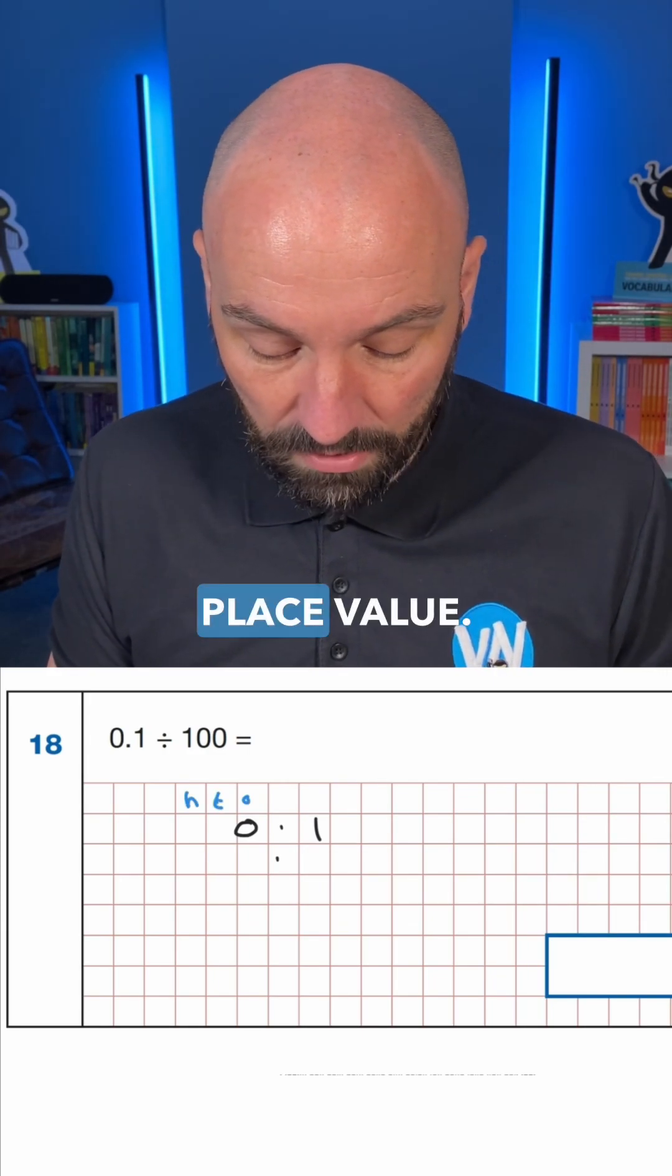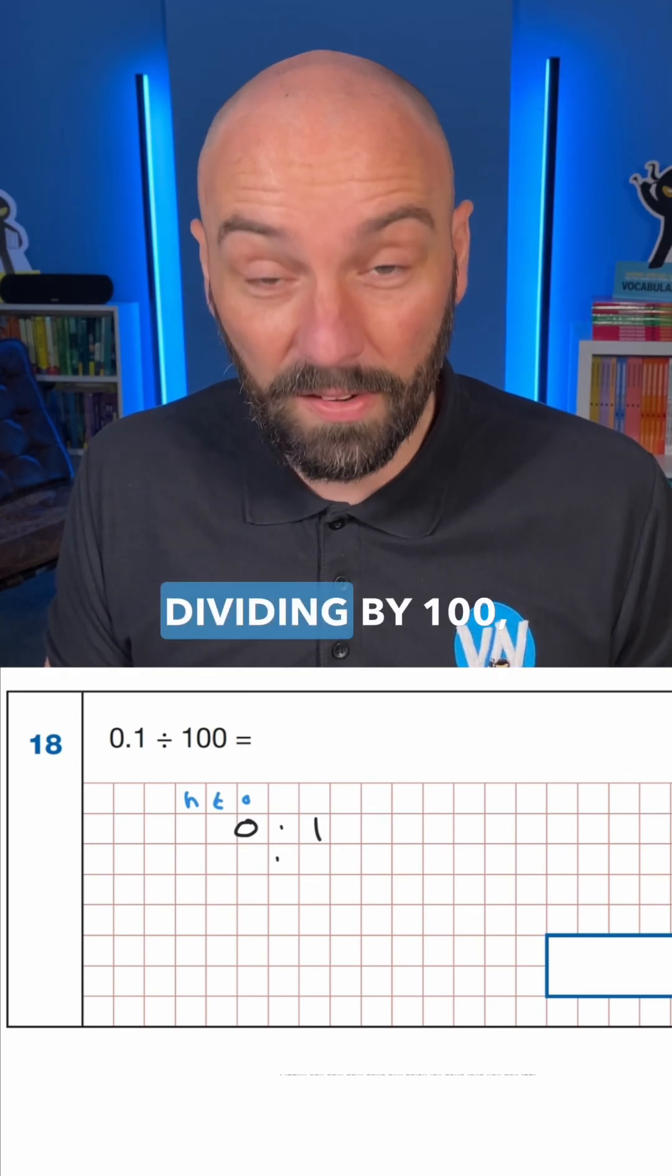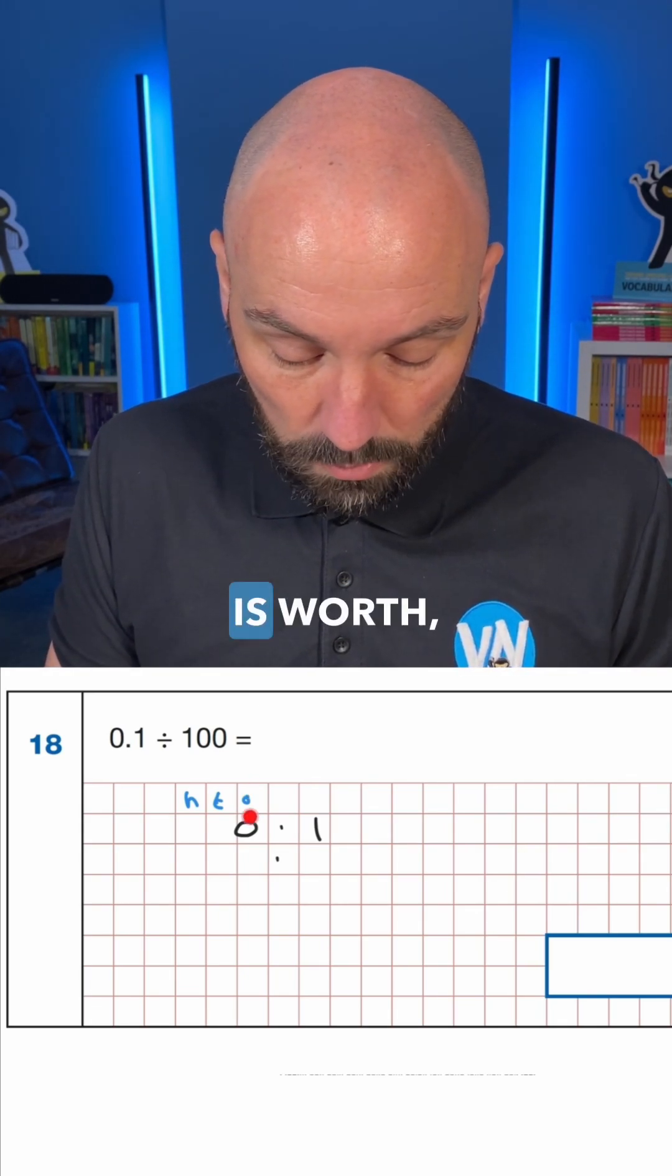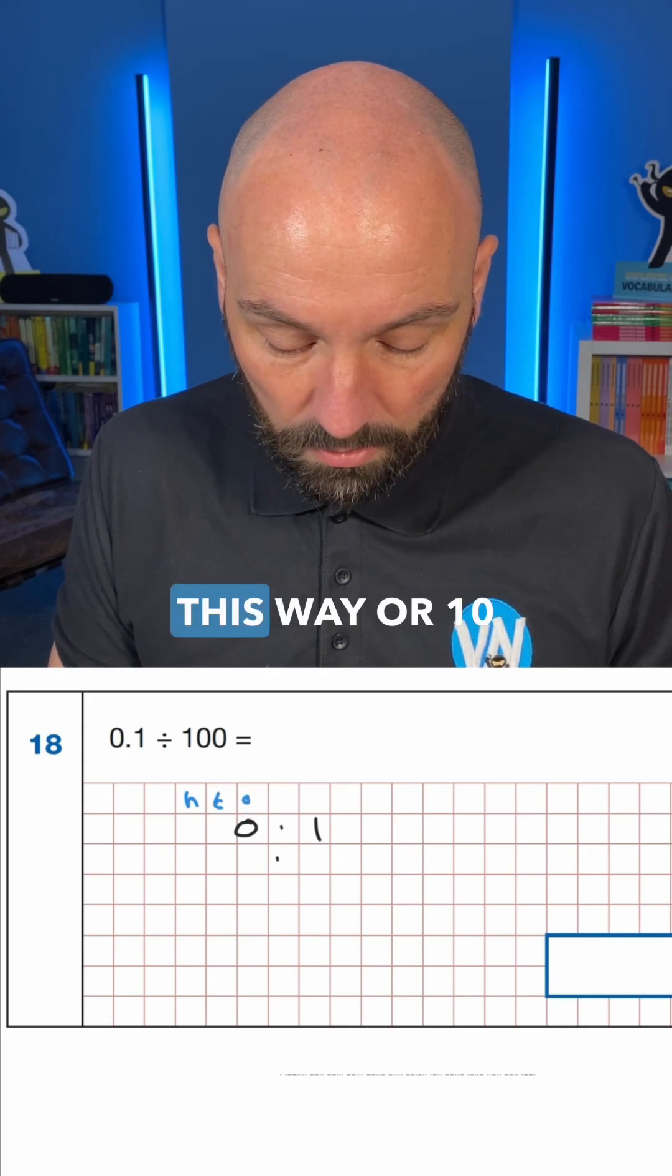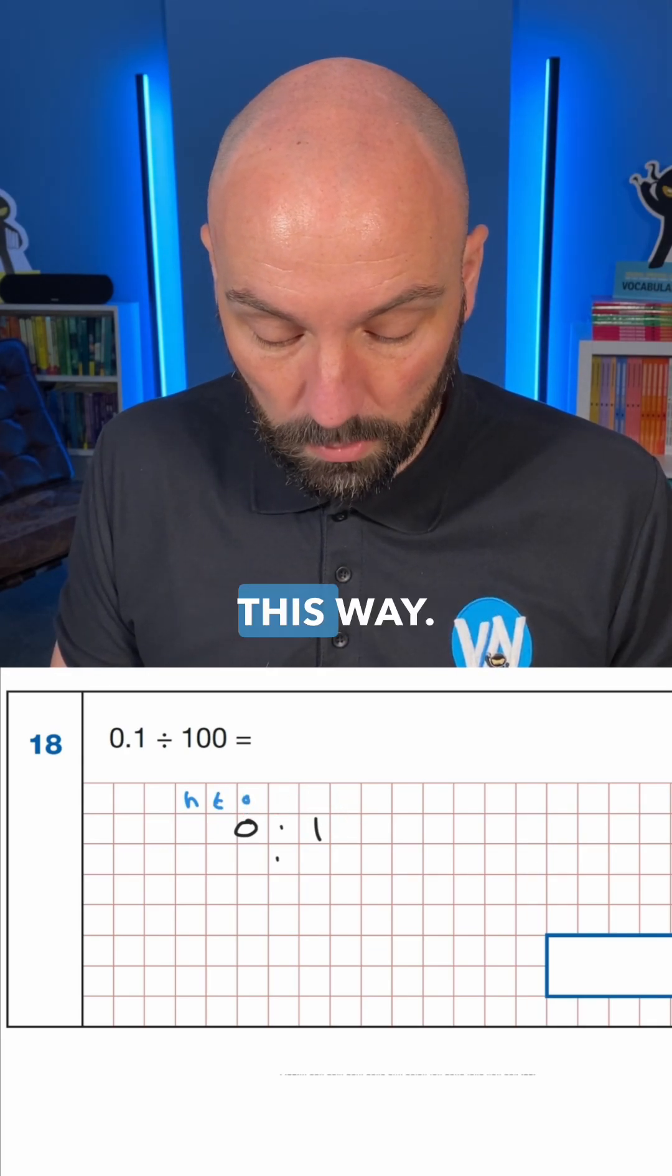So now we have place value, all we need to do because we're dividing by 100, each of these columns is worth 10 times greater this way or 10 times smaller this way.